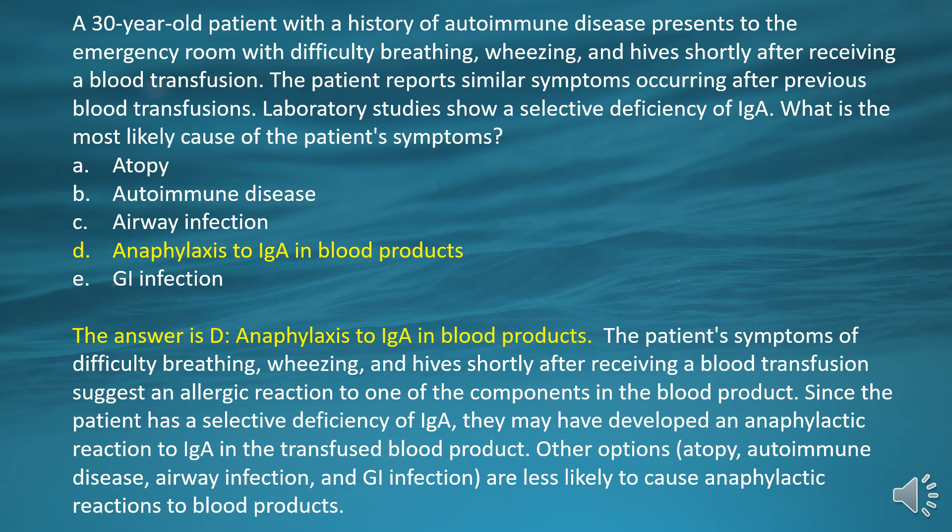The patient's symptoms of difficulty breathing, wheezing, and hives shortly after receiving a blood transfusion suggest an allergic reaction to one of the components in the blood product. Since the patient has a selective deficiency of IgA, they may have developed an anaphylactic reaction to IgA in the transfused blood product. Other options — atopy, autoimmune disease, airway infection, and GI infection — are less likely to cause anaphylactic reactions to blood products.